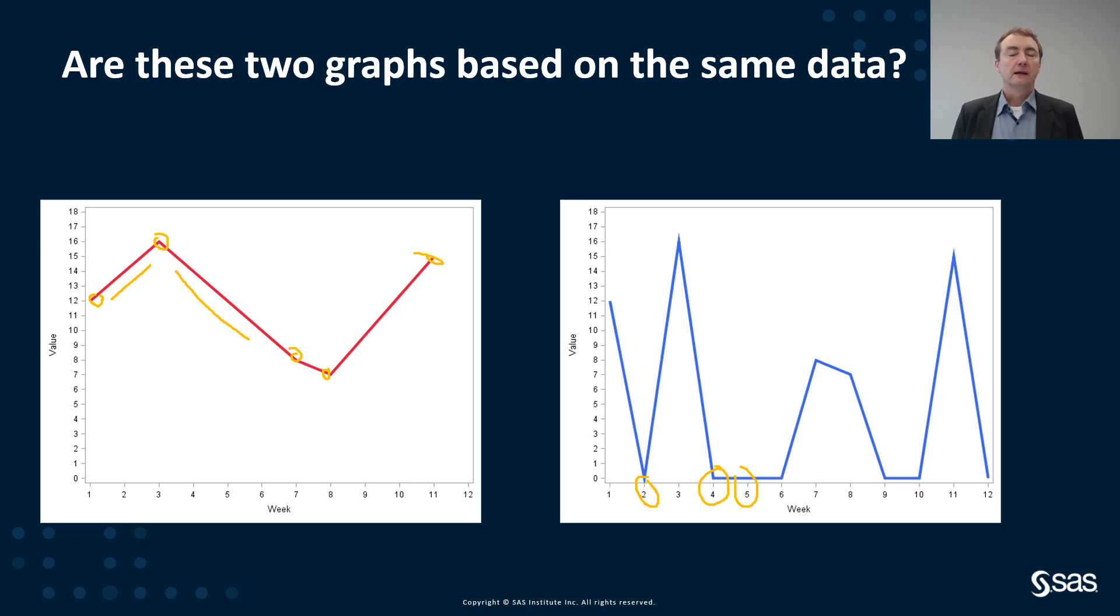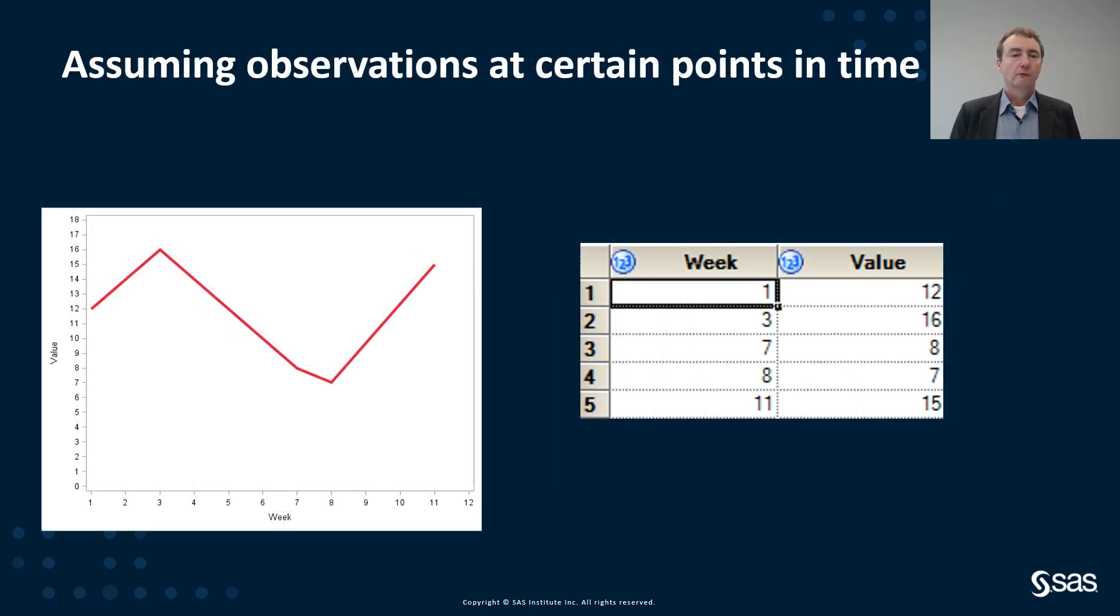So the base data for both graphs are the same. For the red graph we see the original data which was created as we see it here. There were only values available for the first, third, seventh, eighth, and eleventh week. And as we mentioned earlier, the other time values in the line graph were just interpolated.